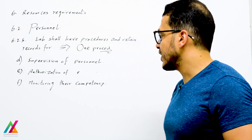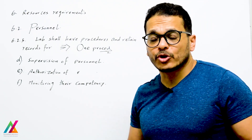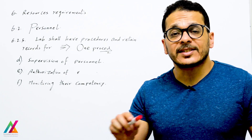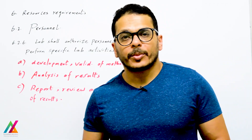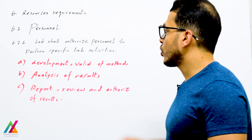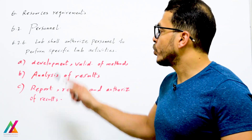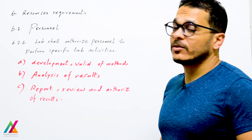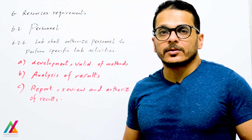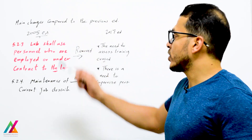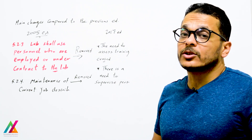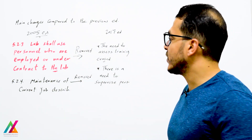After supervision and confirming performance, the technical lead can authorize personnel to perform lab activities. After authorization, you shall continue to monitor their competency through the competency test form every year. The lab shall also authorize personnel to perform specific lab activities such as development and validation of methods, analysis of results, and review and authorization of test reports.